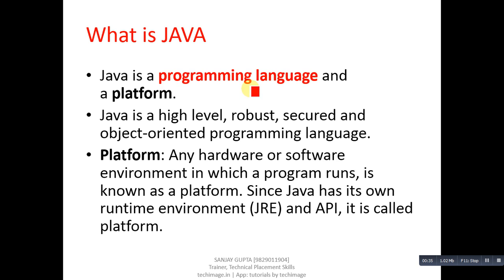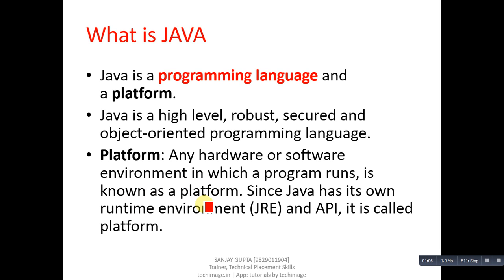Coming on to Java — first we have to discuss what is Java. Java is a programming language and a platform. Java is a high-level, robust, secure, and object-oriented programming language. Programming languages are the languages through which we can develop any software. A platform is defined as any hardware or software environment in which a program runs. So a platform is a combination of hardware and software.